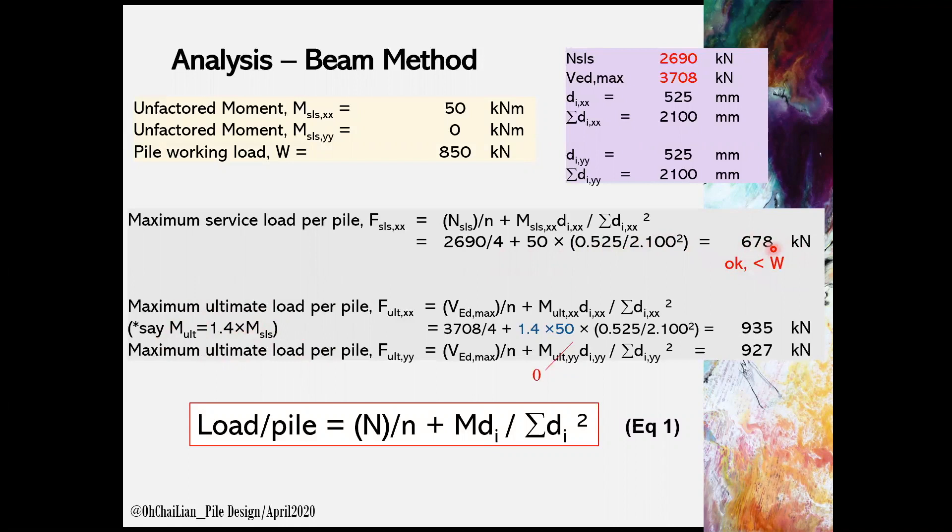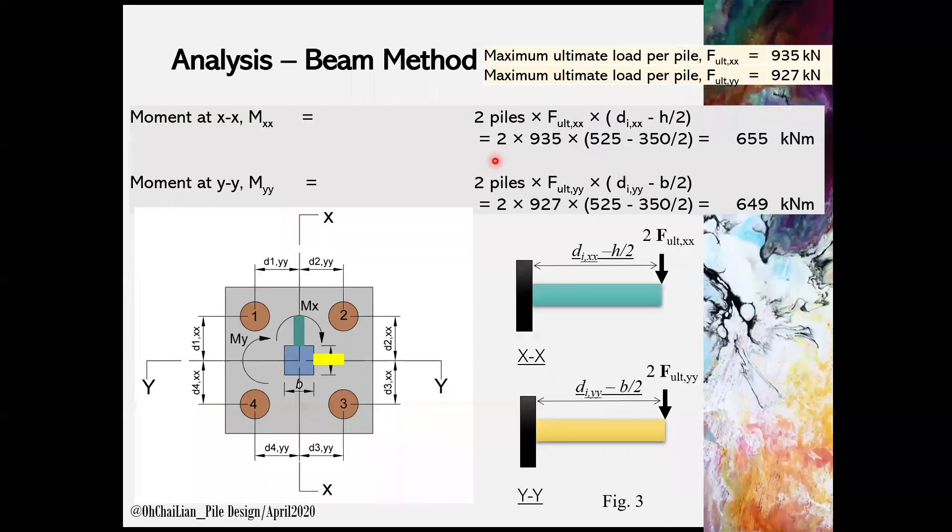Moment at XX and YY directions can be obtained using cantilever beam concept as shown in Figure 3. Say the support of the beam is column and the concentrated load is from the pile. Therefore, the information required for the beam analysis is the distance of the pile from the column face. Again, it is from the column face.